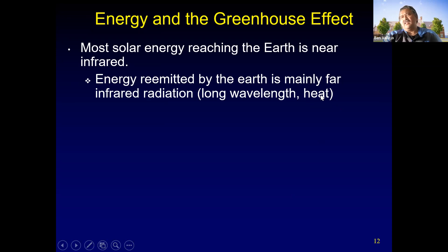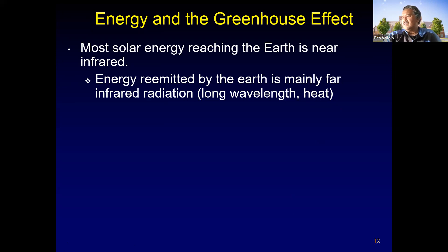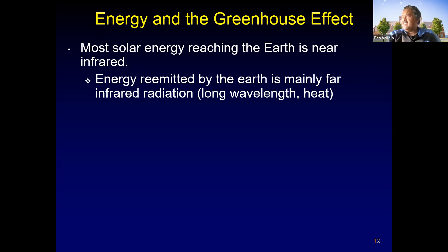Infrared energy has a longer wavelength and less energy than visible light — that's why pointing a remote control at yourself doesn't injure you. Solar energy comes in as near infrared, is absorbed by Earth's surface, and re-emitted as far infrared heat back into the atmosphere. Water vapor absorbs solar energy and that is seen by us as weather. About half of solar energy reaches the Earth's surface, where it's absorbed and re-emitted.